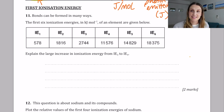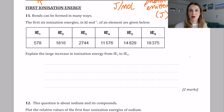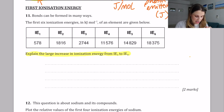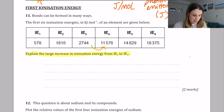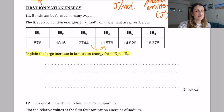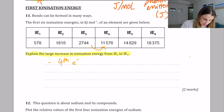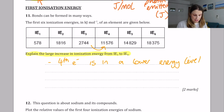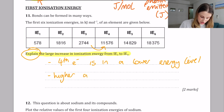Looking at successive ionization energies: the question gives the first six ionization energies and asks us to explain the large increase from IE3 to IE4 — jumping from 2744 to over 11,000 kJ/mol. The only explanation is that the fourth electron is in a lower energy level. That's the first mark. For the second mark, explain that because it's in a lower energy level it has a higher attraction to the nucleus due to being closer.